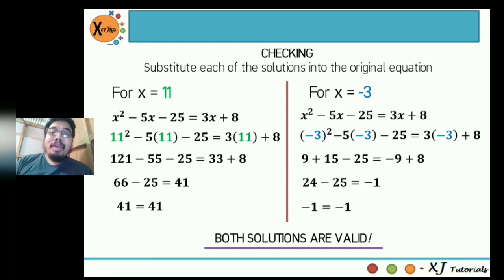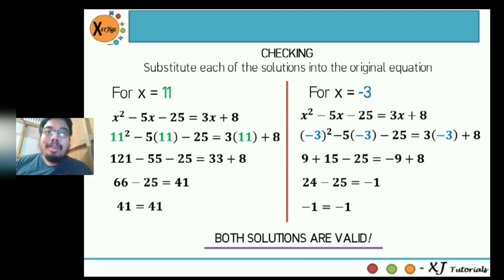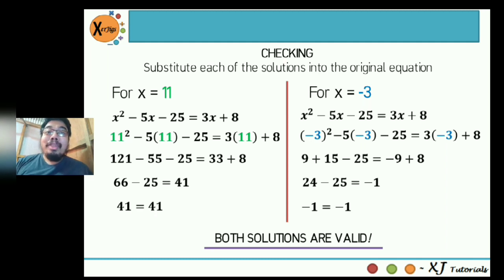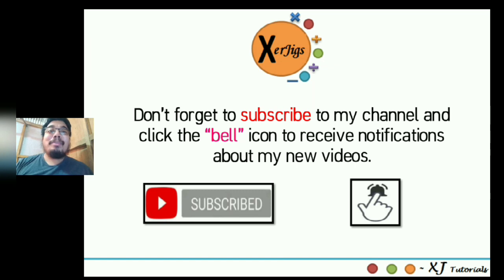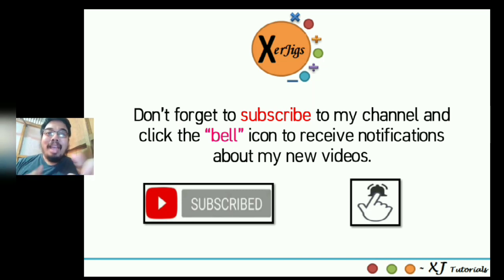To wrap up this session, you're now able to solve quadratic equations by factoring where a = 1. The steps are: identify values of b and c, draw the parentheses and factor your quadratic term, list all factors of c and choose the pair whose sum equals b, write those factors inside the parentheses, apply the zero product rule to solve for the roots, and finally do the checking. Hopefully you learned something today. Don't forget to subscribe and click the bell button. This is Sir Jiggs — see you in my next tutorial. Have a great day.